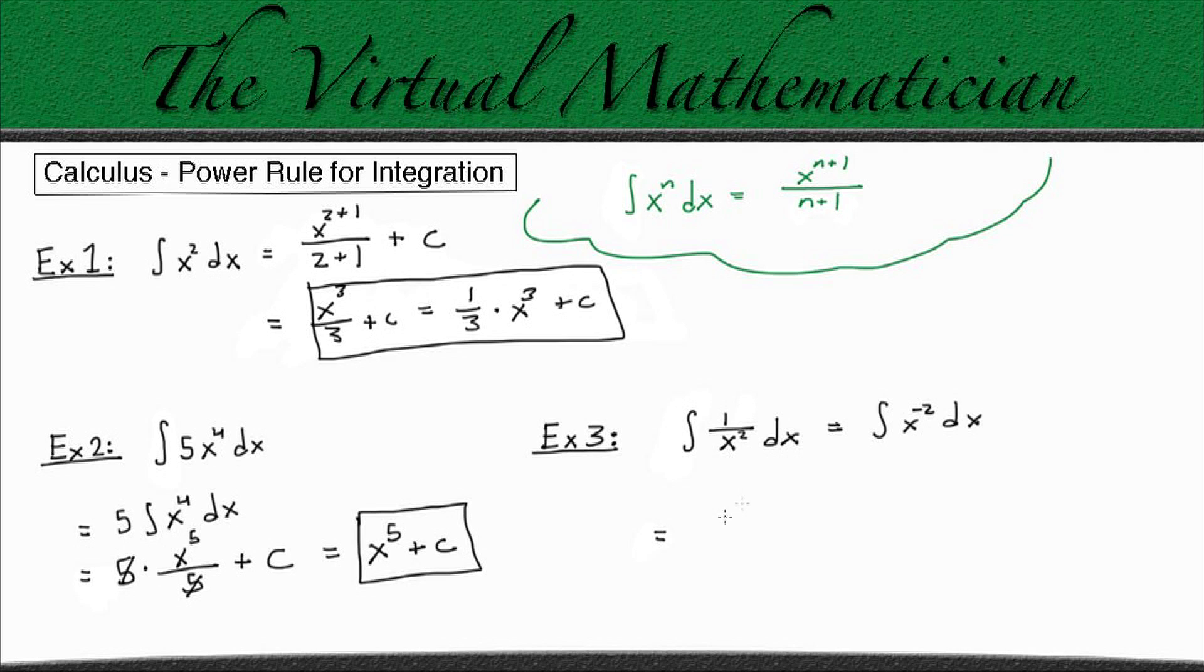So the power rule says to rewrite our function raised to the same power plus 1, so we have minus 2 plus 1, over that new power, minus 2 plus 1, and plus c to keep generality. And we can simplify this and rewrite this as x to the minus 1 power over minus 1 plus c. Then we can simplify this even more and rewrite this as 1 over negative x plus c, because x to the positive 1 power is just x. And that's the final answer for example number 3. Either of these are acceptable answers.